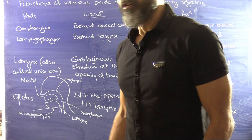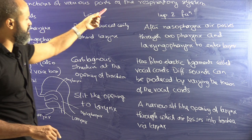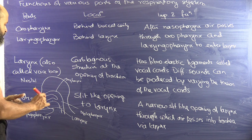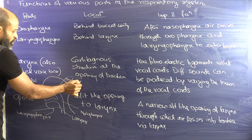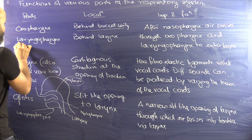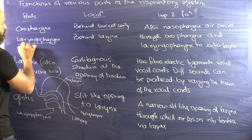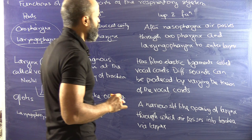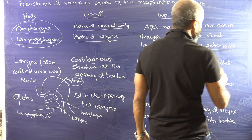Moving on to more parts of the respiratory system: we have the oropharynx, which is basically located behind the buccal cavity, and then we have the laryngopharynx. The laryngopharynx part is behind the larynx. After the nasopharynx, air passes through the oropharynx and laryngopharynx to enter the larynx, also known as the voice box.